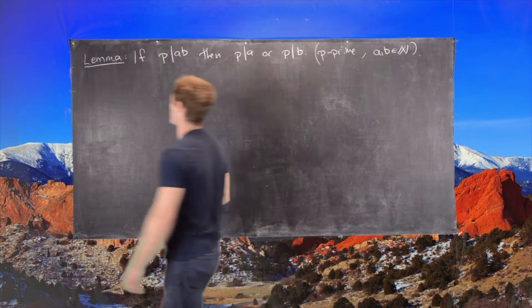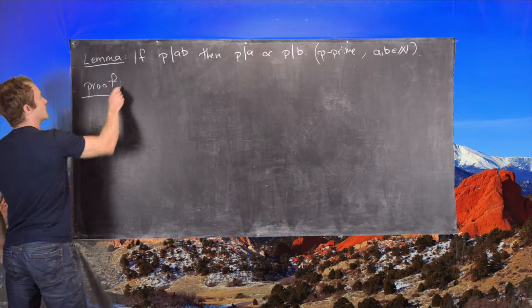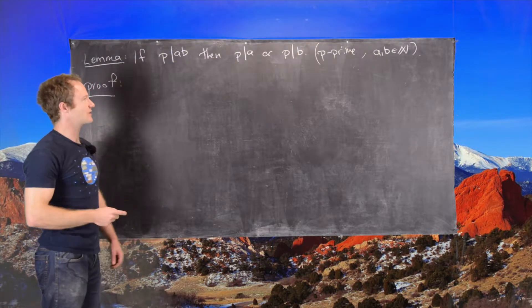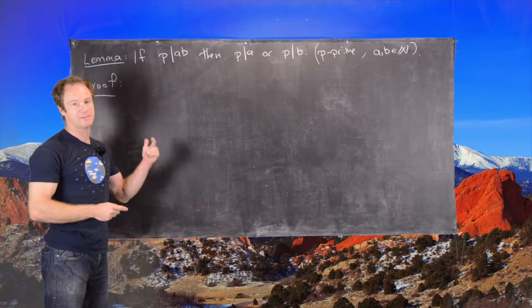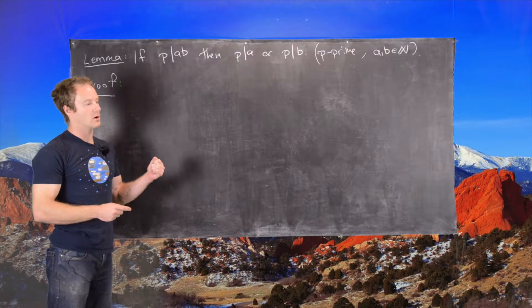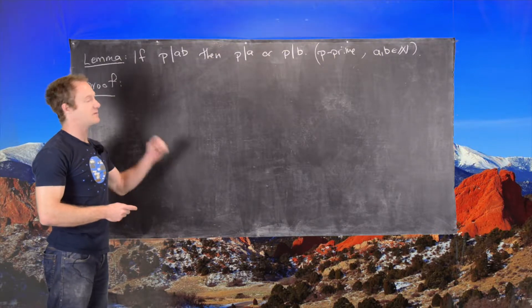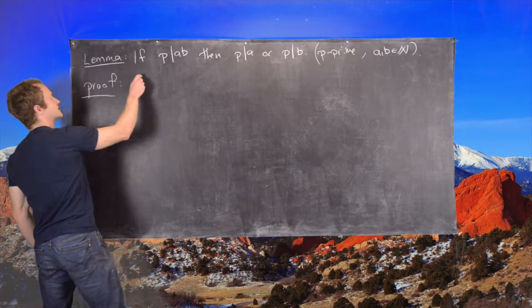So, we're going to start the proof by assuming that P does not divide one of them. We could have P does not divide A, P does not divide B, or P divides both. What we're going to show is that if P does not divide one of them, then it must divide the other one.